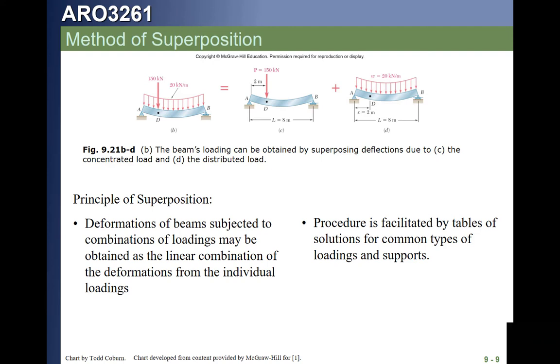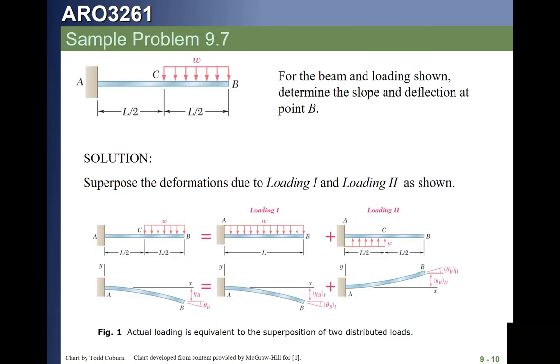This slide is out of Beer and Johnson, and basically what it does is it says if we have another combined load, like this one with a distributed load and a point load, we can solve it for the same boundary conditions and a point load, superimpose that on the distributed load, and we'll get the same solution that way.